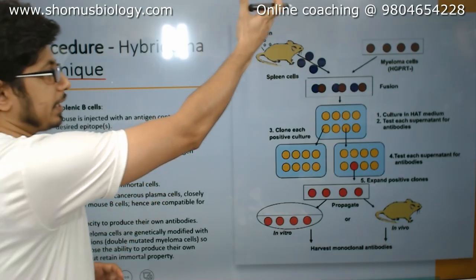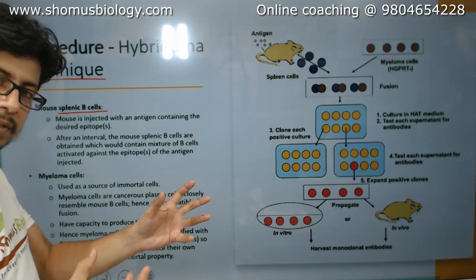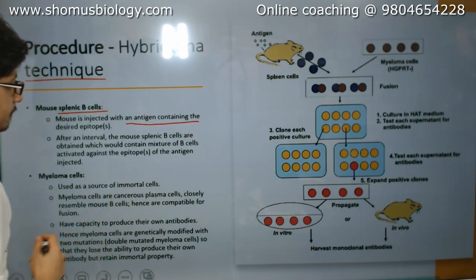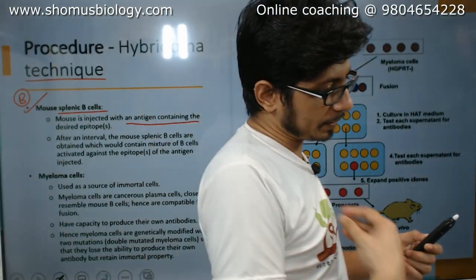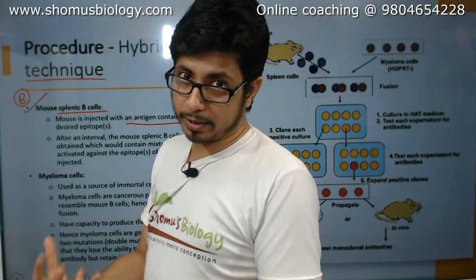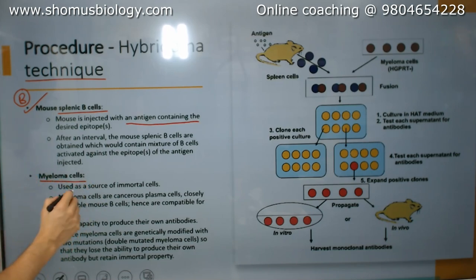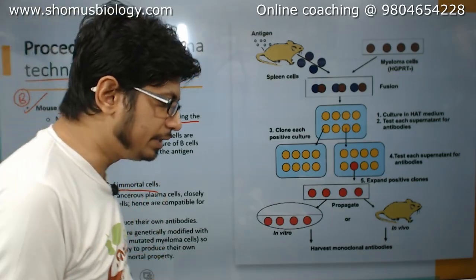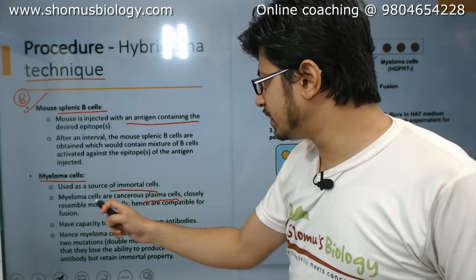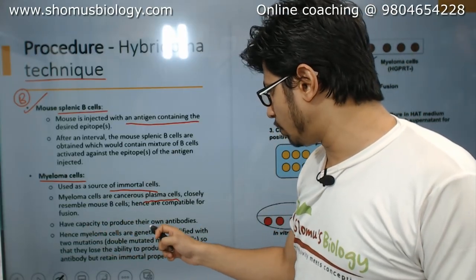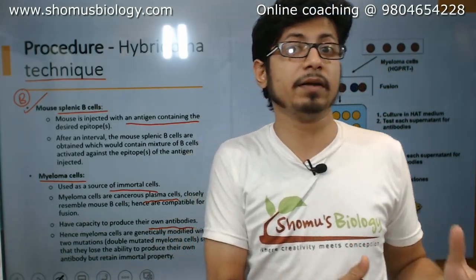Now let's look at the technique in detail. We have the mouse spleen cells — the splenic B cells. We are collecting the spleen to extract the B cells out of it. The mouse is injected with an antigen, and after a 72-hour interval we take the B cells. B cells are present in the spleen because the spleen is an important immunological organ where antigen-antibody interaction occurs. For the myeloma cells: myeloma cells are cancerous plasma cells closely related to B cells, used as a source of immortal cells because we want the cells to live. They have the capacity to produce their own antibodies and behave somewhat like plasma cells, the modified version of B cells.